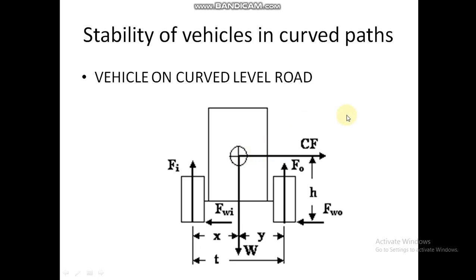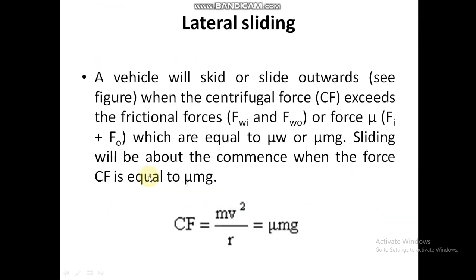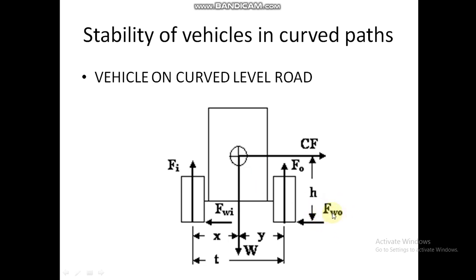After hitting the obstruction or curbstone, the sliding velocity becomes zero immediately and the vehicle will experience a force that tries to tilt or overturn it towards the right side. This sudden lateral deceleration produces an inertia force ma acting through the center of gravity in addition to the centrifugal force. So when the vehicle is hit by the obstruction while sliding, there will be an extra inertia force ma acting towards the right side in addition to the centrifugal force.